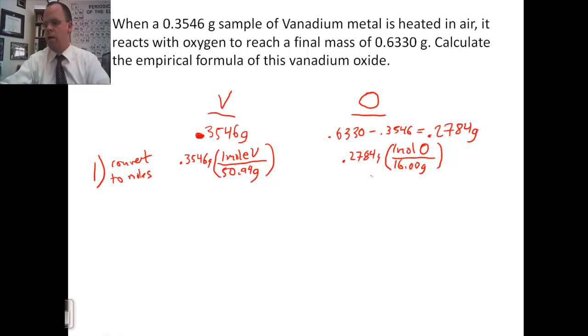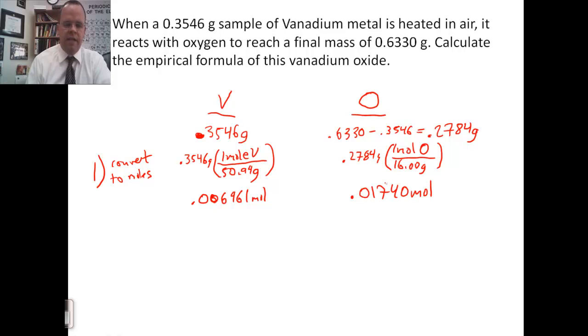When you do this, for vanadium, you get 0.006961 moles. And for oxygen, you get 0.01740 moles. So, that's step one. Convert each into moles.